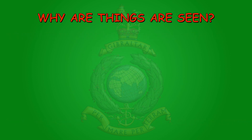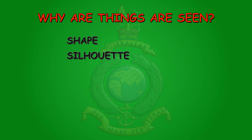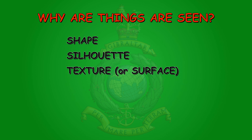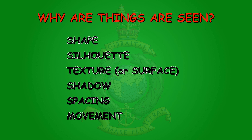So why are things seen? Whether an object is easy or difficult to see depends upon several factors. The main ones are shape, silhouette, texture - we used to call this surface - shadow, spacing, and finally movement. I was taught to remember this as five S's and one M.